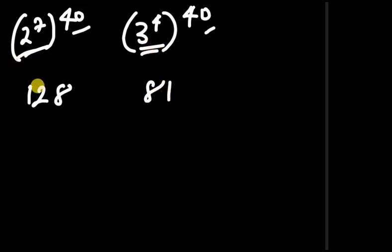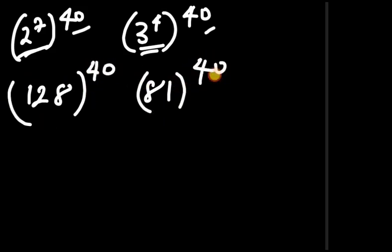So we have 128 to the power of 40 versus 81 to the power of 40. You can see that 128 to the power of 40 will be greater than 81 to the power of 40. Therefore, 2 to the power of 280 is greater than 3 to the power of 160.